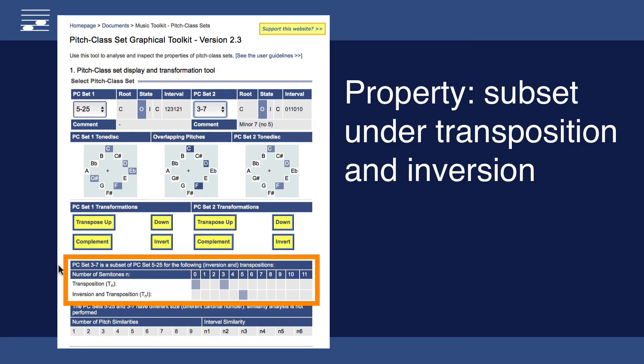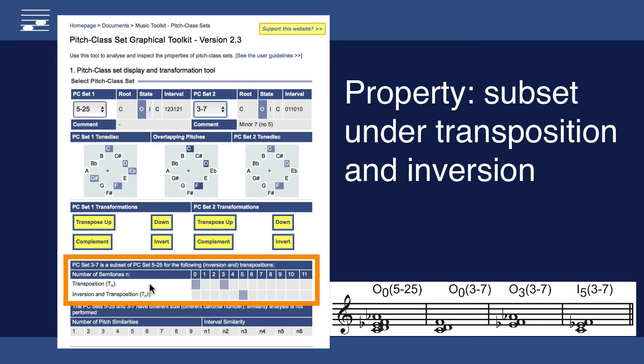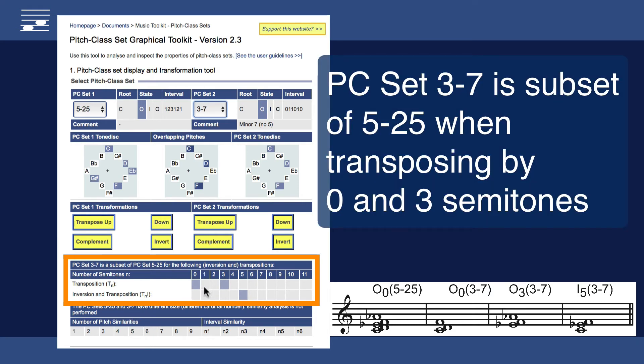The subset property under transposition and inversion is shown in this matrix. The first line tells me that set 3-7 is a subset of 5-25 under transposition by either 0 or 3 semitones. This is confirmed by the inspector pitch disk diagrams.